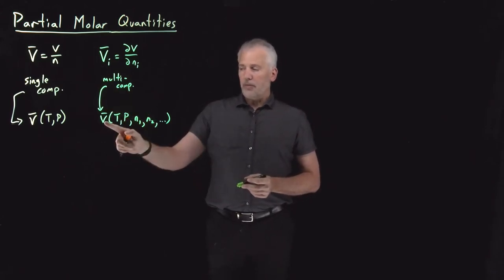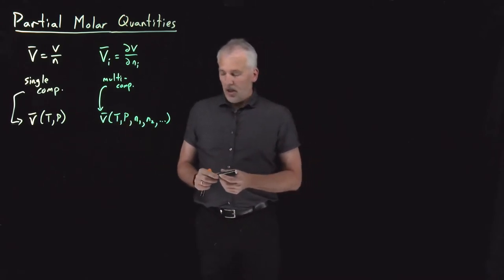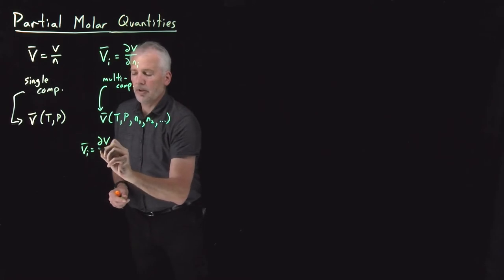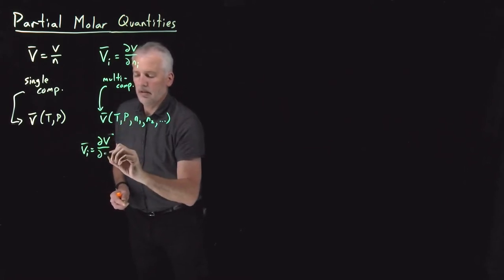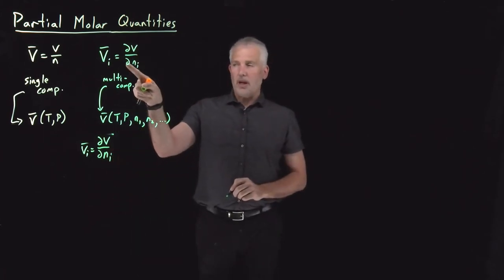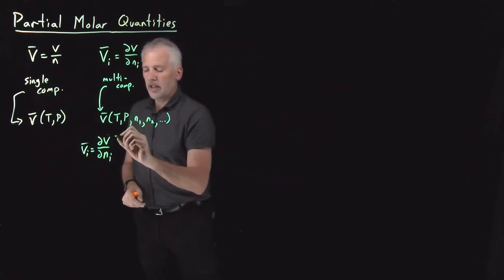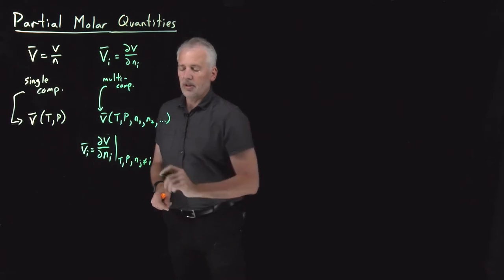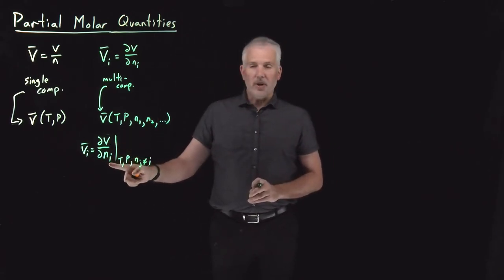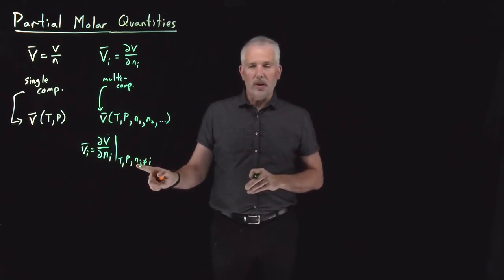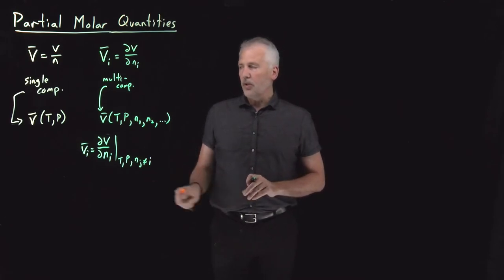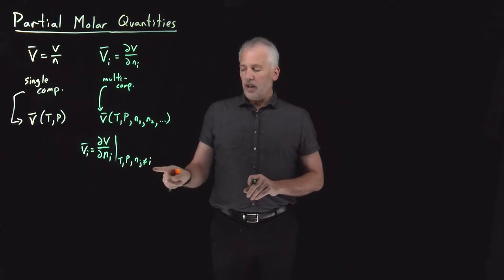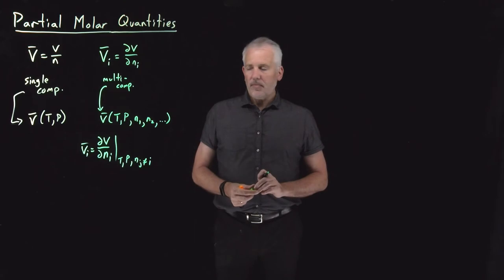The partial molar volume depends on more than just temperature and pressure — it depends on composition. When we take this partial derivative to obtain the partial molar volume with respect to moles of component i (moles of sodium chloride, for example), we need to do that not only while holding temperature and pressure constant, but also holding the number of moles of water and all other components constant. So the more careful definition of partial molar volume is the derivative of volume with respect to moles of i, holding all other thermodynamic properties and moles of each other component constant.